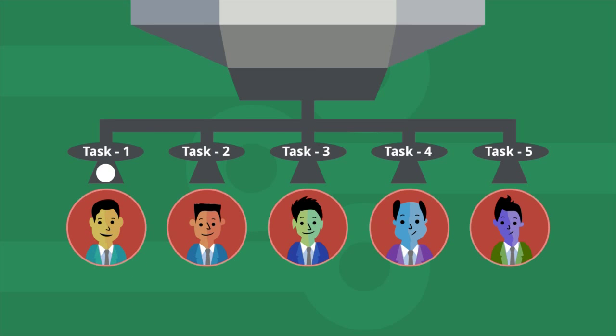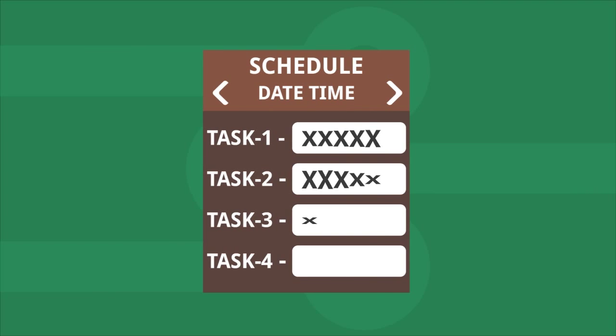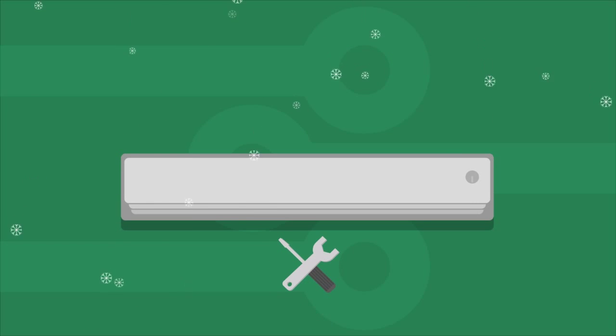It records opportunities and breaks them into tasks and assigns them to the right people for further action. It creates checklists and schedules for recurring tasks that will save energy, like AC servicing before each summer.